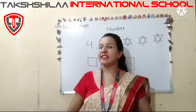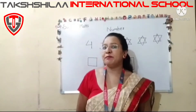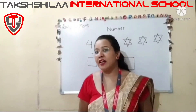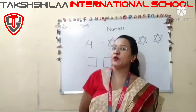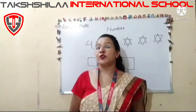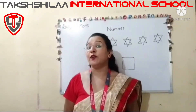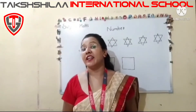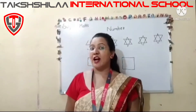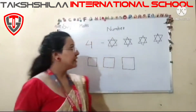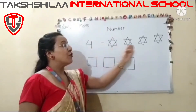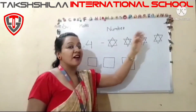But kids, we have learnt in the previous class how to write number one, number two, and number three. But today we are going to learn how to write number four. Now look at the board — this is number four with four stars.